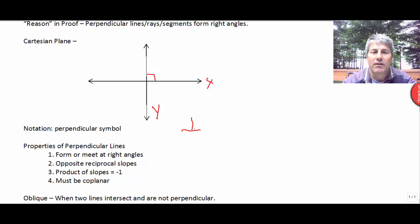Some properties of perpendicular lines. Well, of course, they form and meet at right angles. The slopes of those two lines, if they're perpendicular, are opposite reciprocals, or the products of their slopes are negative one. And for this to take place, they must be coplanar.